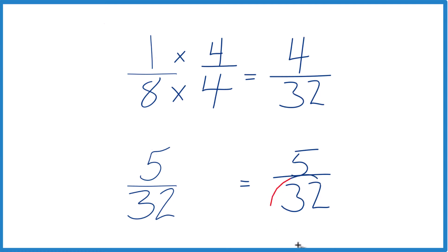Now though, we have the denominators are the same, we can just compare the numerators. 5 is greater than 4, so 5 32nds, that's greater than 4 32nds.